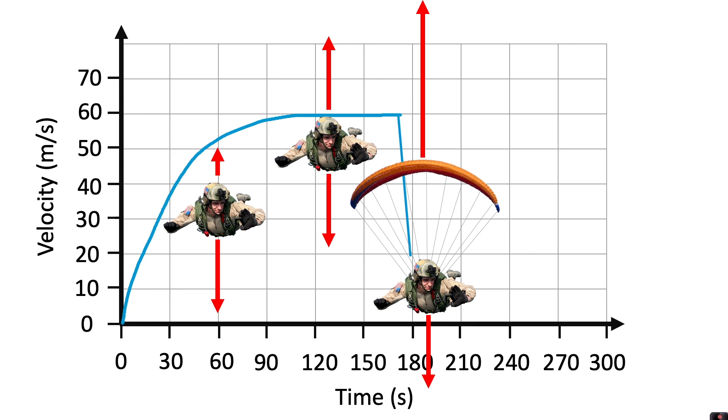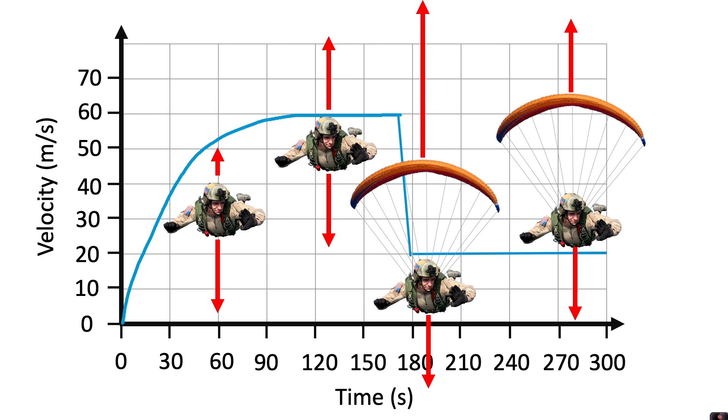Until eventually, we get another horizontal part on the graph, because we are now experiencing balanced forces. And the parachutist is travelling at a new, lower, constant speed.